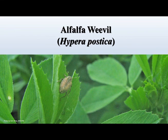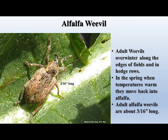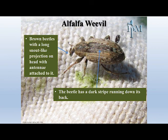Our first pest is alfalfa weevil. Adult alfalfa weevils overwinter along field edges in hedgerows and other sheltered places, then move back into the alfalfa as temperatures warm in spring. An adult is about three-sixteenths of an inch long — a brown beetle with a snout projection from its head with antennae attached to it, and a dark stripe running down its back.